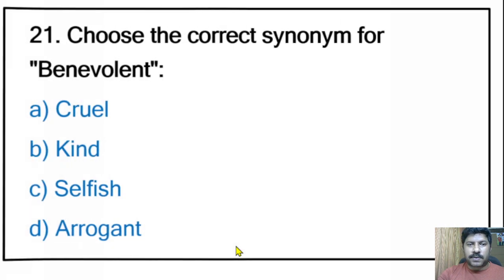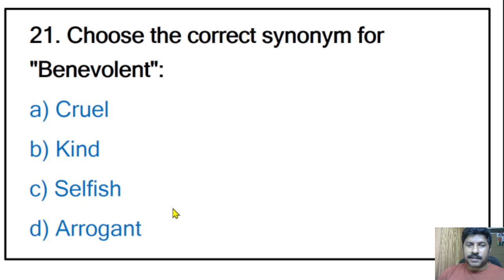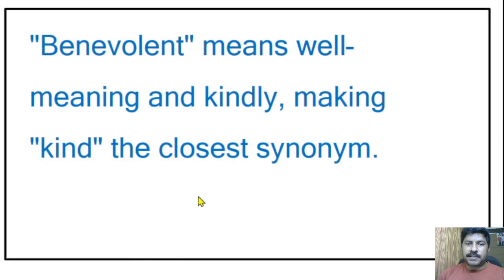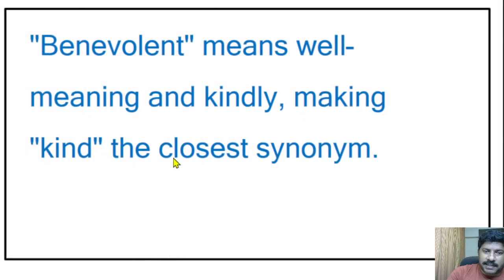Twenty-first question: choose the correct synonym for 'benevolent' — cruel, kind, selfish, or arrogant? The correct answer is kind. Benevolent means well-meaning and kindly, making 'kind' the closest synonym among the options.